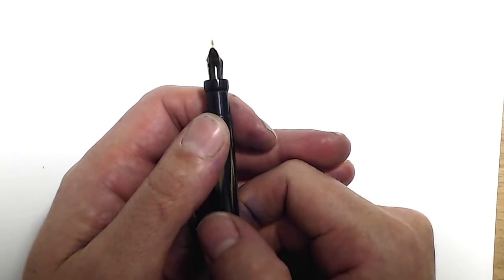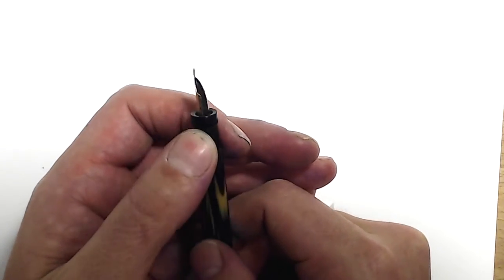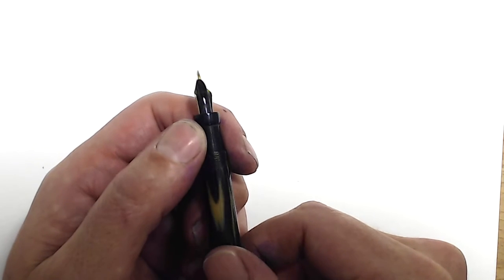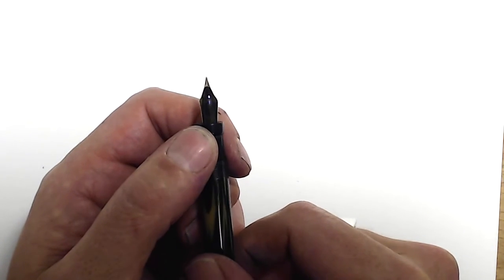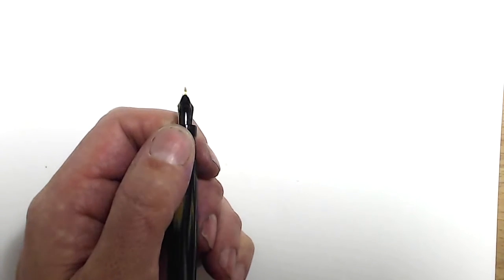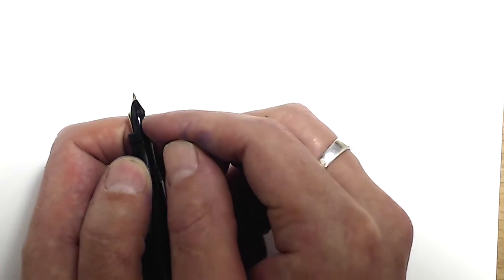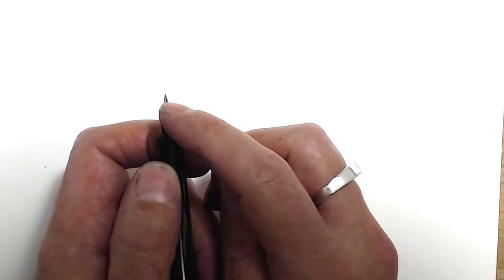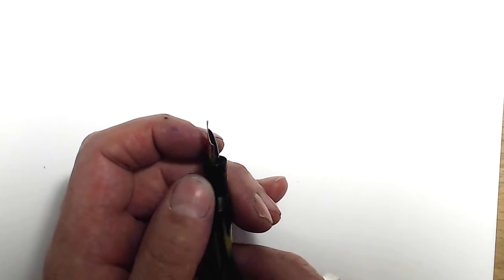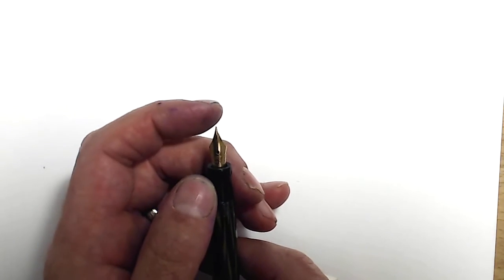Then we have the feed, which is Lucky Curve feed, which is very thin. The light's not really catching it, but it kind of goes chunk, chunk, chunk, like jaggy, like almost like a saw blade up the other side. It's got a very deep channel going right down the center of it. So anyways, those are the parts of the pen.